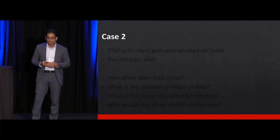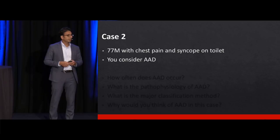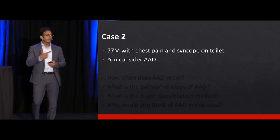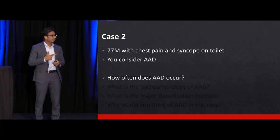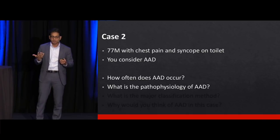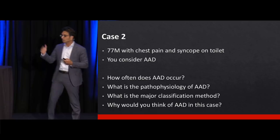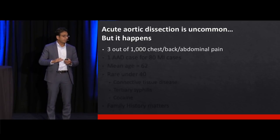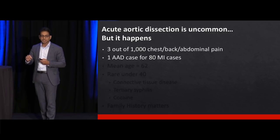Case number two: 77-year-old man with chest pain and syncope while on the toilet. You consider acute aortic dissection because chest pain plus syncope suggests possible pericardial tamponade. How often does dissection occur with chest pain patients? It's uncommon but it happens — three out of 1,000 patients with chest, back, or abdominal pain will end up having dissection.